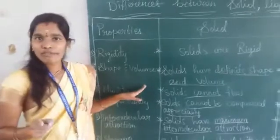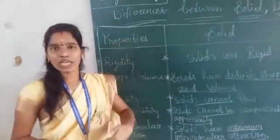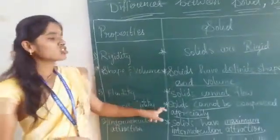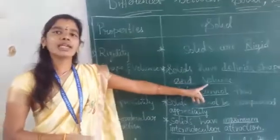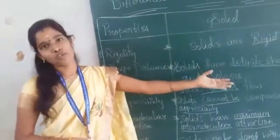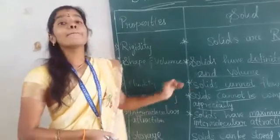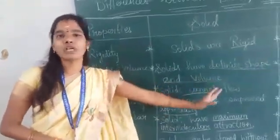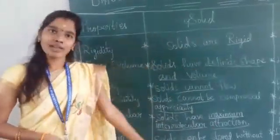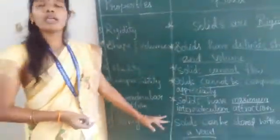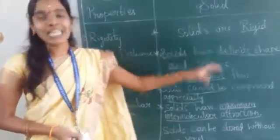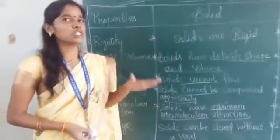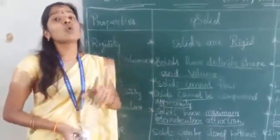For fluidity: solids cannot flow; liquids flow from higher to lower level; gases flow in all directions. For compressibility: solids cannot be compressed appreciably; liquids and gases can be compressed. For intermolecular attraction: maximum in solids, less in liquids, least in gases. For storage: solids without vessel, liquids need a vessel, gases need closed vessels.